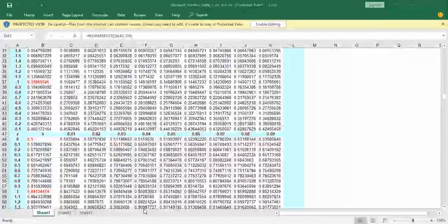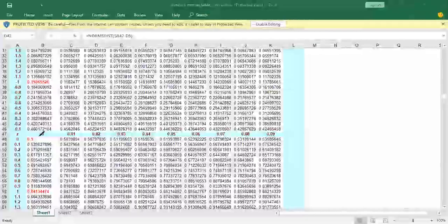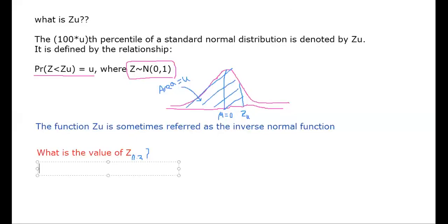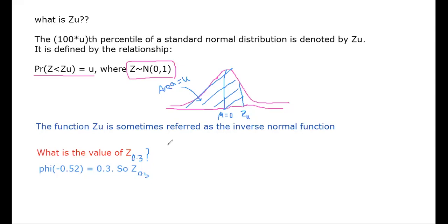Writing the answer: φ(-0.52) = 0.3, therefore Z_0.3 = -0.52. This is how you answer this type of question.